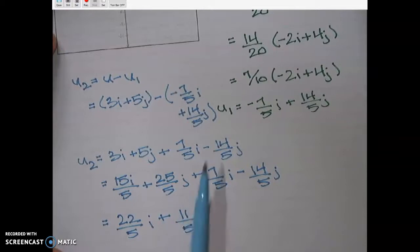So again, we had minus a negative, so we distributed that negative in. So we had plus 7 fifths i minus 14 fifths j. And I got a common denominator there of 5. And we end up with u2 is 22 over 5i plus 11 over 5j.